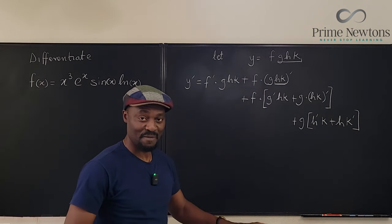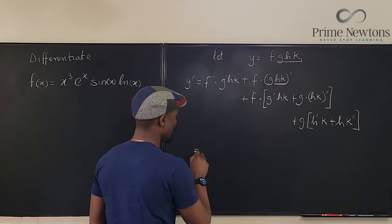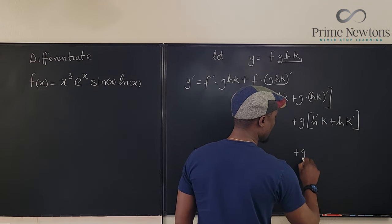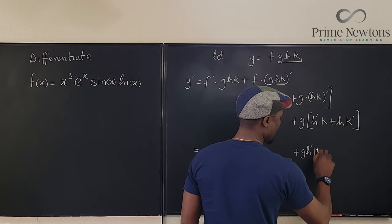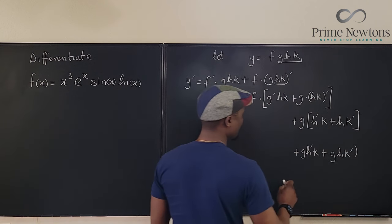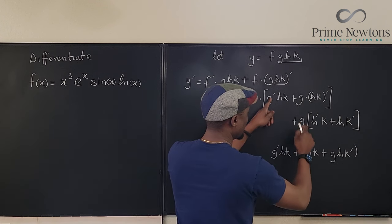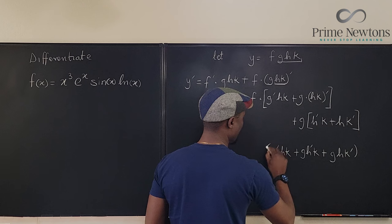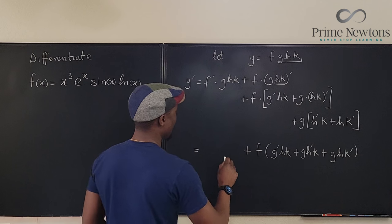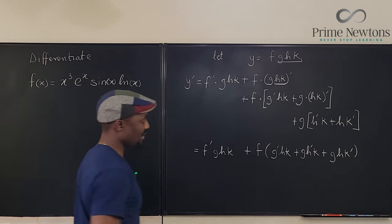It looks like we've finally come to the end of it. Let's go back to the beginning and write everything in full. If I distribute this g, I'm going to have g·h prime·k plus g·h·k prime, and all of this will be added to g prime·h·k — multiplied by f — plus f prime·g·h·k. So putting it all together we have all those terms combined.